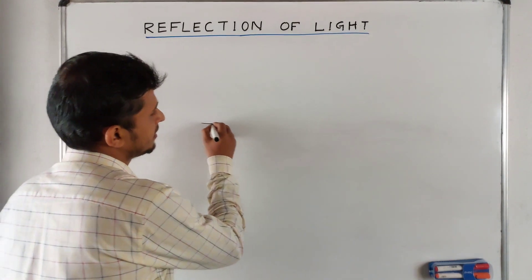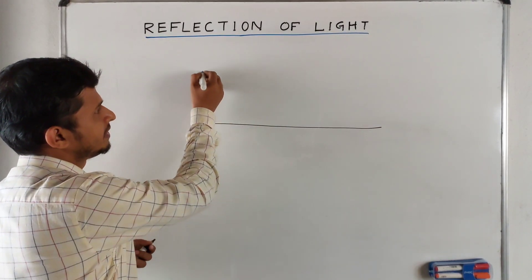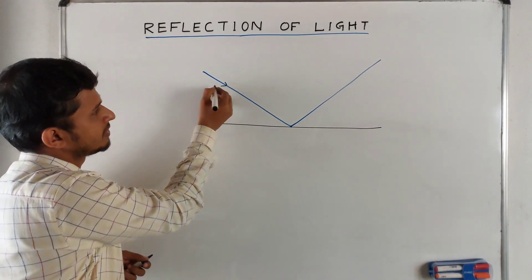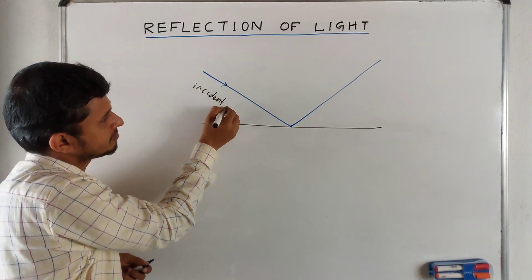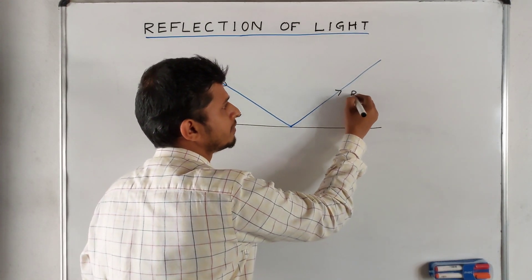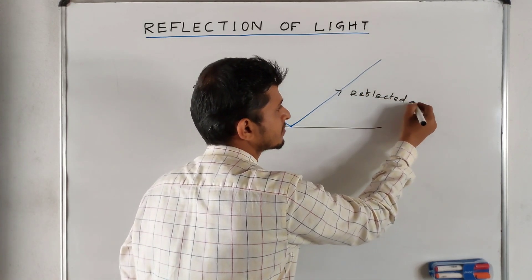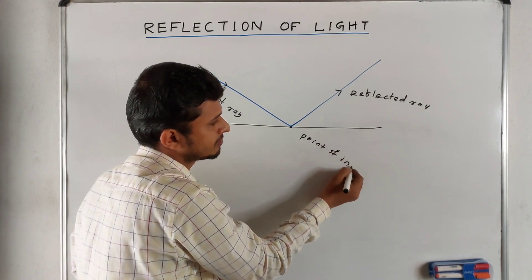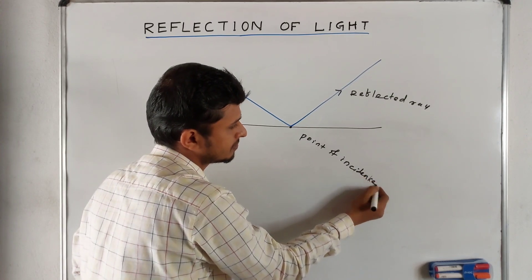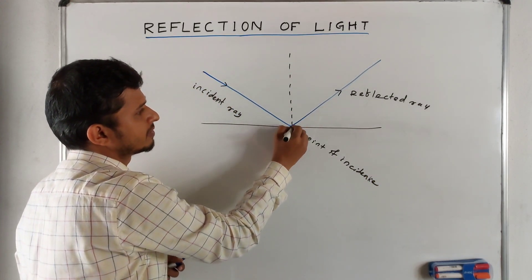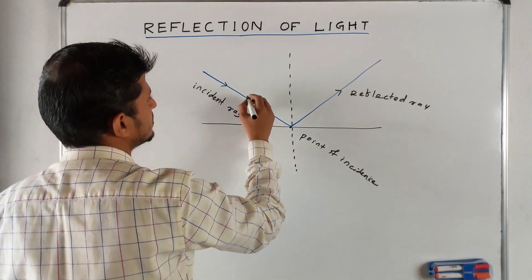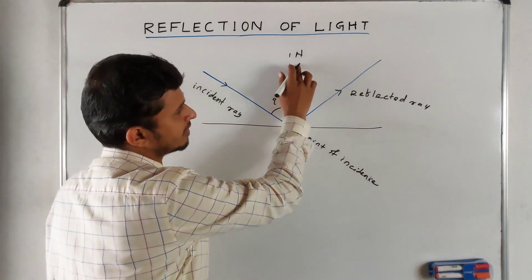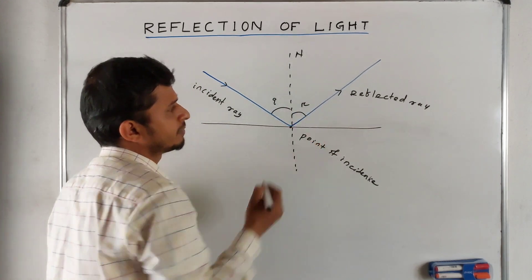Reflection of light. Consider a reflecting surface. A ray of light strikes on the surface and reflects in this direction. This ray is called the incident ray and this ray is called the reflected ray. The point is called the point of incidence, and this is the normal. The angle between the incident ray and the normal is called the angle of incidence, and the angle between the normal and the reflected ray is called the angle of reflection.